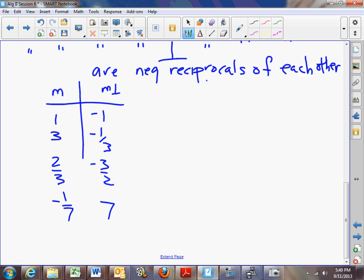So two lines with slopes of 1 and negative 1 are perpendicular. 3 and negative 1 third are perpendicular. 2 thirds and negative 3 halves are perpendicular. Negative 1 seventh and 7 are perpendicular. One of the ways you can check is if when you multiply the two slopes together you get negative 1, then they are numbers that would be perpendicular slopes. And that takes care of that.